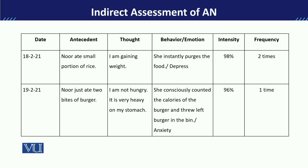For example, on the 18th, Noor took a small portion of rice and then instantly did purging, because of which her mood became depressed. The intensity of that mood depression and sadness was 98%. She did this act — eating a low portion of rice — twice, and purged it twice as well.